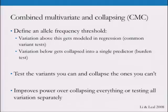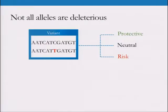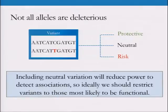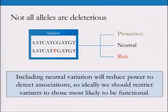Anyone familiar with genetics should know that variants aren't all going to be affecting phenotype. You can break them down into roughly three classes: they could increase someone's risk, they could be neutral — a lot of them are neutral — and they might actually have protective effects. If you're including neutral variation in these studies, it's diluting out your signal. That's bad because it's getting rid of the power in the data to detect the real associations. So we really want to focus on risk variants, and even protective ones — we don't want the neutrals.